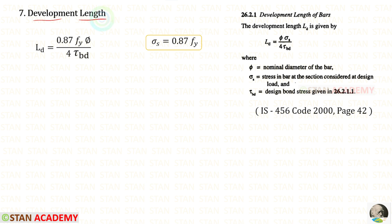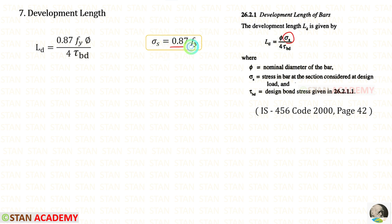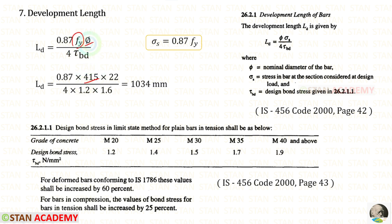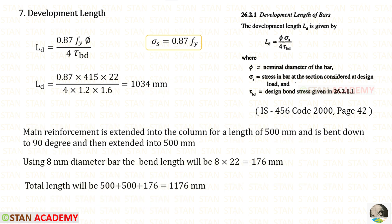We now find the development length. From page number 42 of the code, the formula involves σs = 0.87 × fy, where fy = 415 and the bar diameter φ = 22 mm. From page number 43, the design bond stress τbd for M20 is 1.2 N/mm². Since we are using Fe 415 deformed bars, τbd is increased by 60%, so we multiply by 1.6. This gives a development length Ld = 1034 mm.